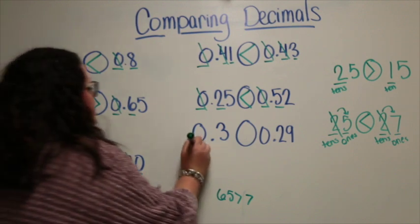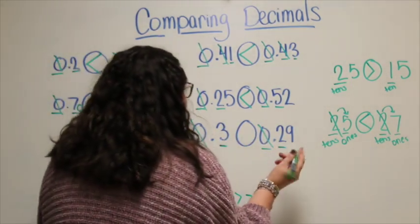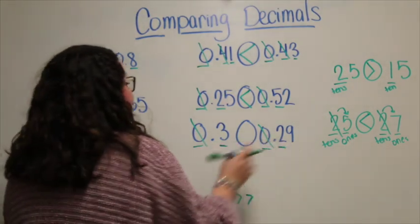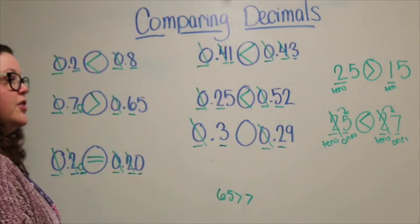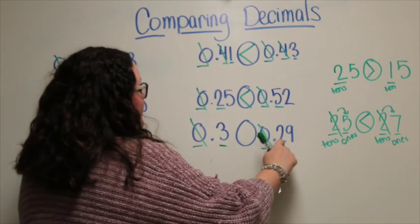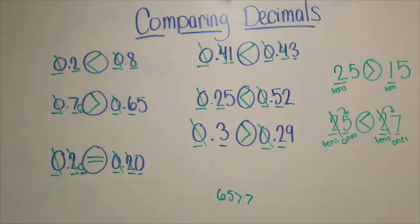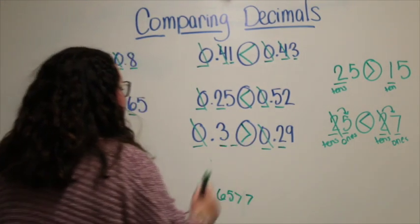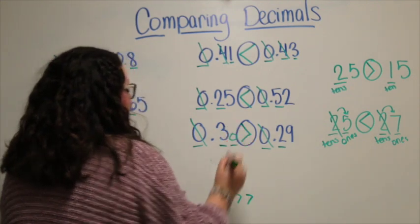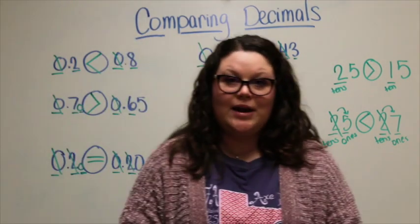My last example for today: start in my ones place — they are both zeros. Go to my tenths place. Remember, don't look at this as a three and a twenty-nine. I have to take it one place value at a time. I have three tenths and two tenths, and three tenths is greater than two tenths. If I wanted this number to show its hundredths place value, he would have a zero there — so I could read that as thirty hundredths and twenty-nine hundredths. That's a pretty straightforward lesson today with comparing decimals.